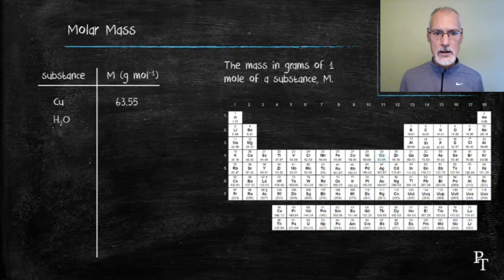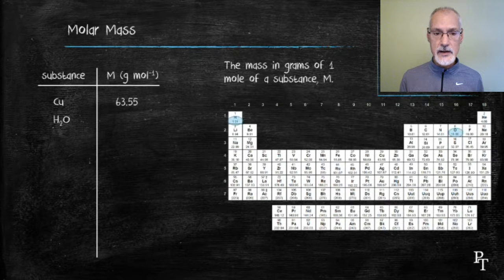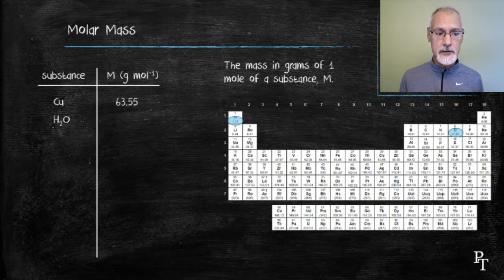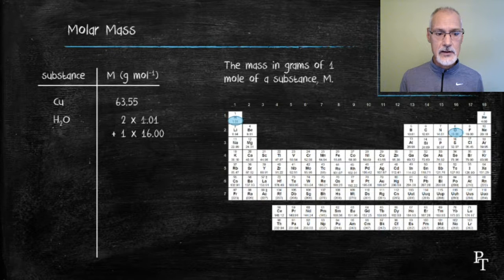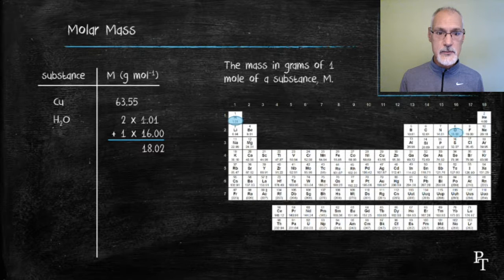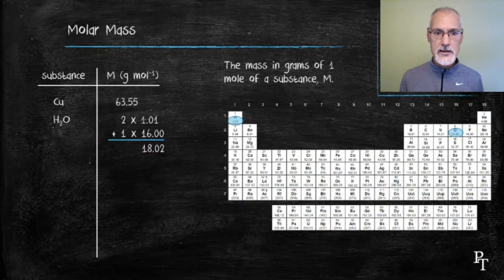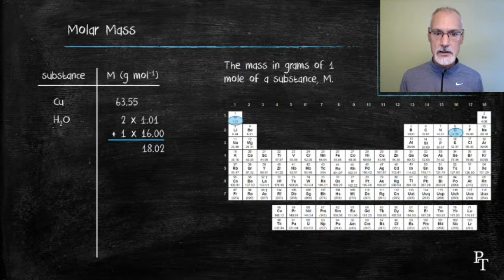What about 1 mole of water molecules? What would its mass be? Well, it's made of hydrogen and oxygen, but I require 2 parts hydrogen and 1 part oxygen. So I add those together, coming up with 18.02 grams. So if I was to possess 18.02 grams of water, that would be the same as 6.02 times 10 to the 23rd water molecules.